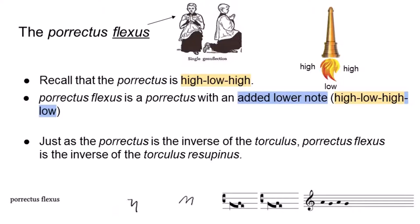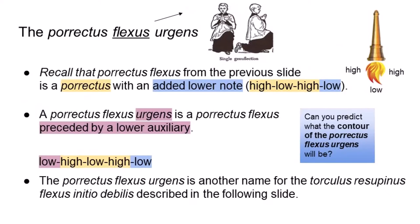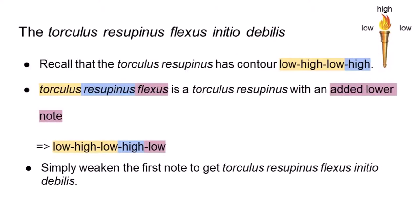The perectus flexus has the contour high-low-high-low and is the inverse of the torculus resupinus — a perectus with an added lower note, which can also be thought of as a double clevis or a torculus preceded by a higher note. The perectus flexus can also be preceded by a lower auxiliary, in which case it becomes a perectus flexus urgence, or perectus urgence flexus — that is, a torculus resupinus flexus initio debilis, or torculus initio debilis resupinus flexus. Having fun yet? Its contour is low-high-low-high-low.